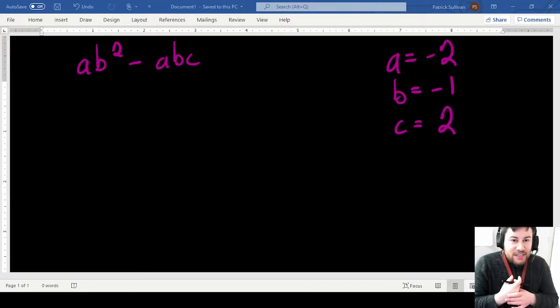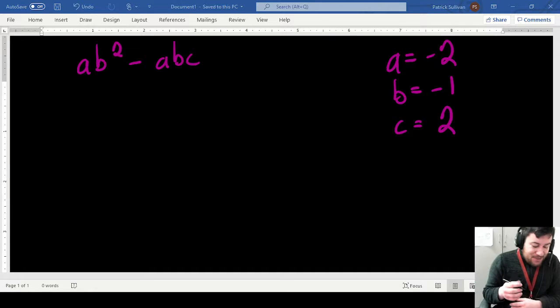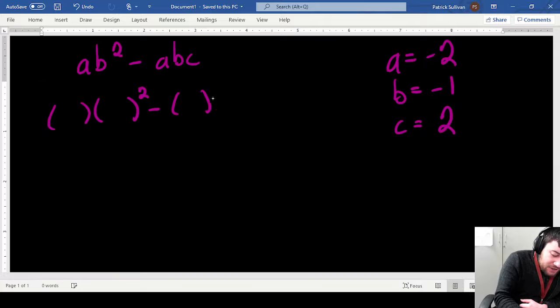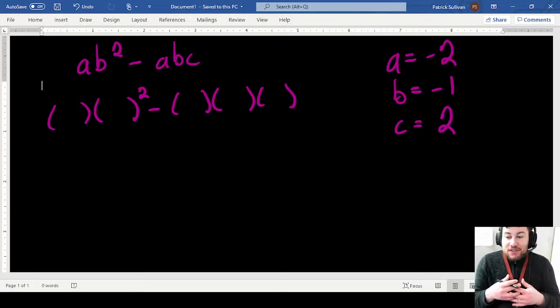So our expression is a times b squared minus a times b times c. The most critical part about solving this type of problem is to use parentheses, which I'm going to show you. Before I even substitute in any numbers, in place of every single variable, as you can see, I'm writing a set of parentheses. This is going to make sure that I catch all of my negative signs correctly and that I do order of operations correctly.